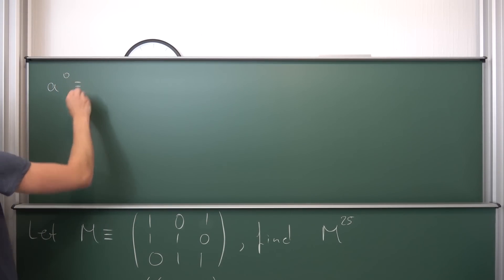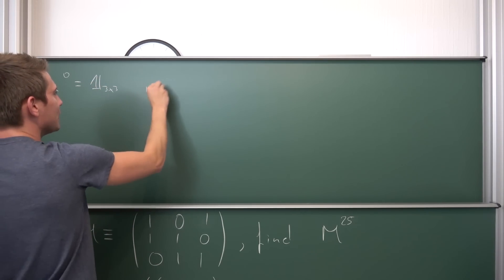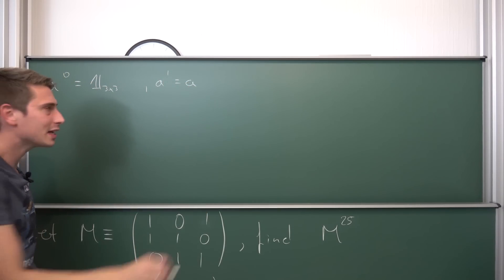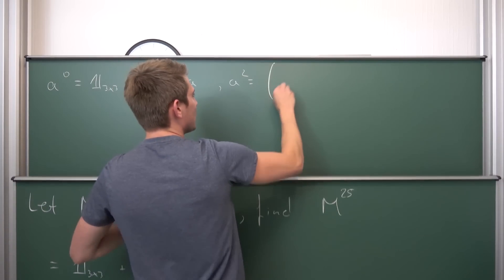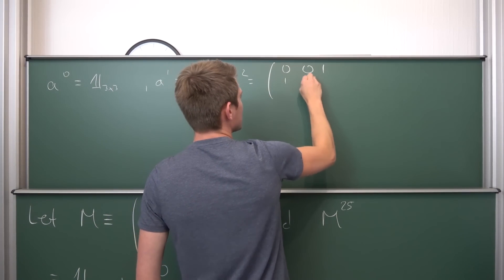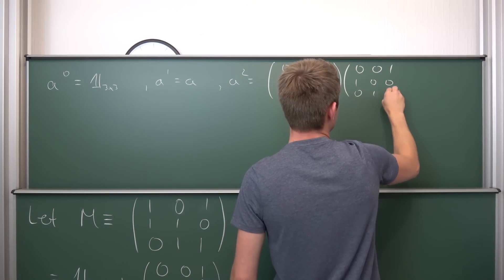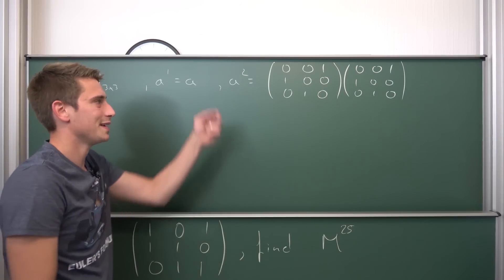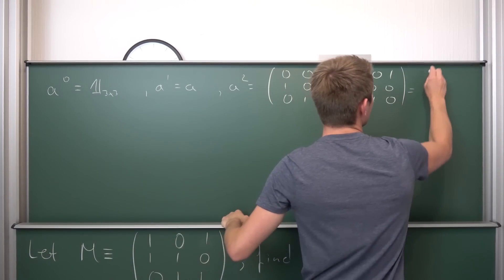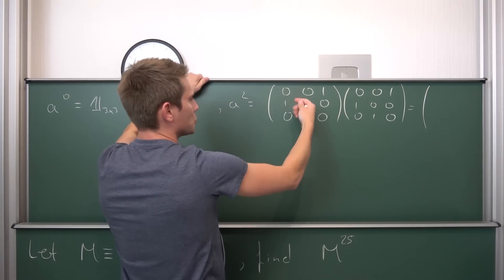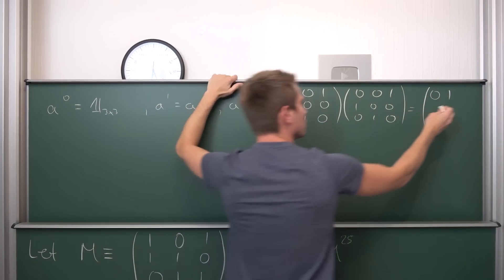A to the 0th power is obviously going to be the identity matrix in three dimensions. What about A to the first power? This is just A. And now here comes the interesting part - what is A squared? A squared is nothing but A times A. So I'm going to write it out: the matrix with entries 0,0,1 / 1,0,0 / 0,1,0 times the same thing. Now we are going to multiply columns onto rows and see what we get out on the other side.